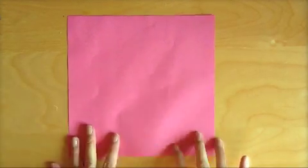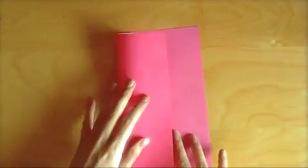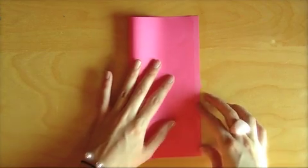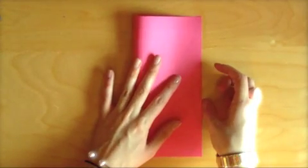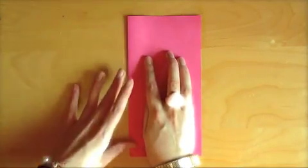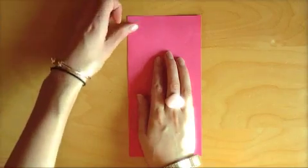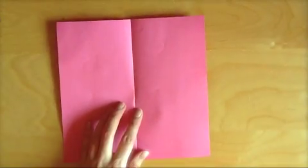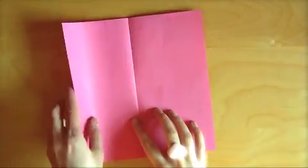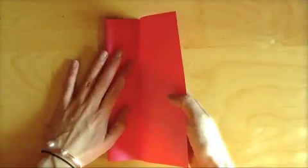Okay, so you take a piece of paper and you fold it in half. You want to make sure that the lines are really crisp. Then you fold each side into that center fold.